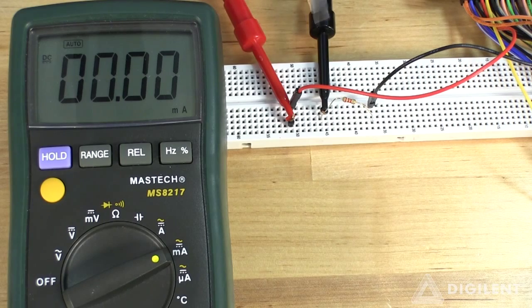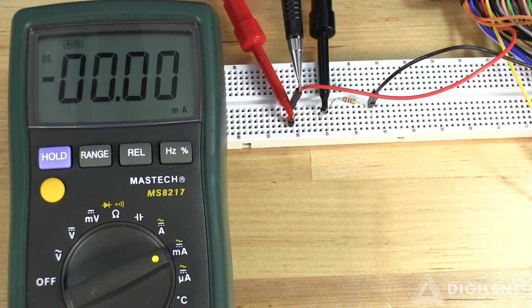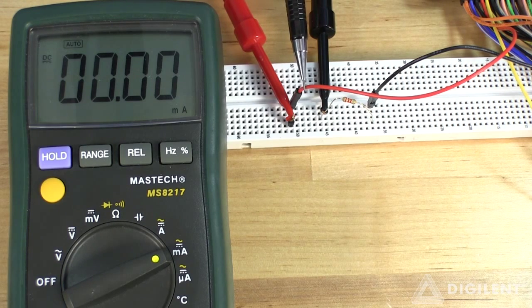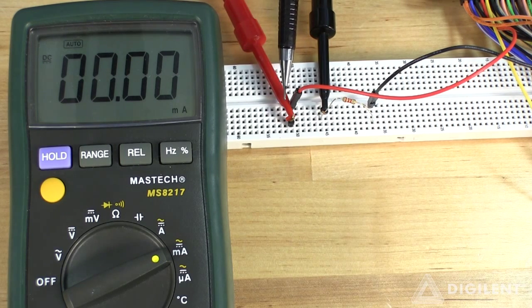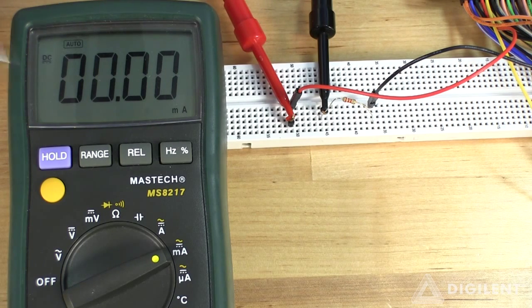This is our circuit. Here's our 2.2 kiloohm resistor. Ground is applied here and we're using V plus on the analog discovery to apply 5 volts. We've placed our ammeter between the source and this terminal of the resistor. We're measuring current here on our DMM.